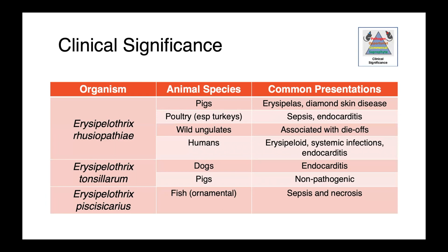In wild ungulates in western Canada and in the Canadian Arctic, Erysipelothrix rhusiopathiae has been isolated from animals that have died in mass mortality events. It may be playing a role in die-offs of really charismatic megafauna such as caribou and muskox. And then in people, Erysipelothrix rhusiopathiae causes erysipeloid, which is a skin infection, as well as systemic infections, sepsis, and even endocarditis.